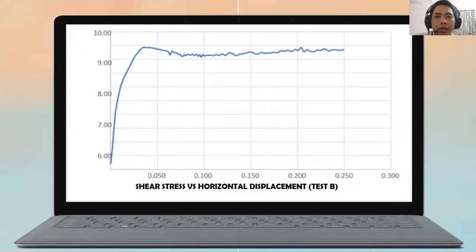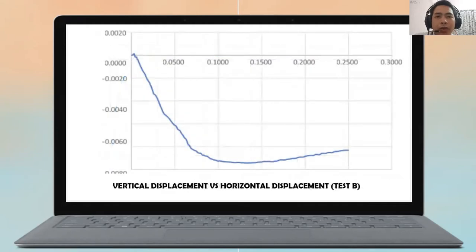From this graph this is shear strength versus horizontal displacement for test B. And then from the graph you can see that the sand is quite dense. Then we move to the vertical displacement versus horizontal displacement for test B. You can see that the graph is very loose. The sand is very loose.